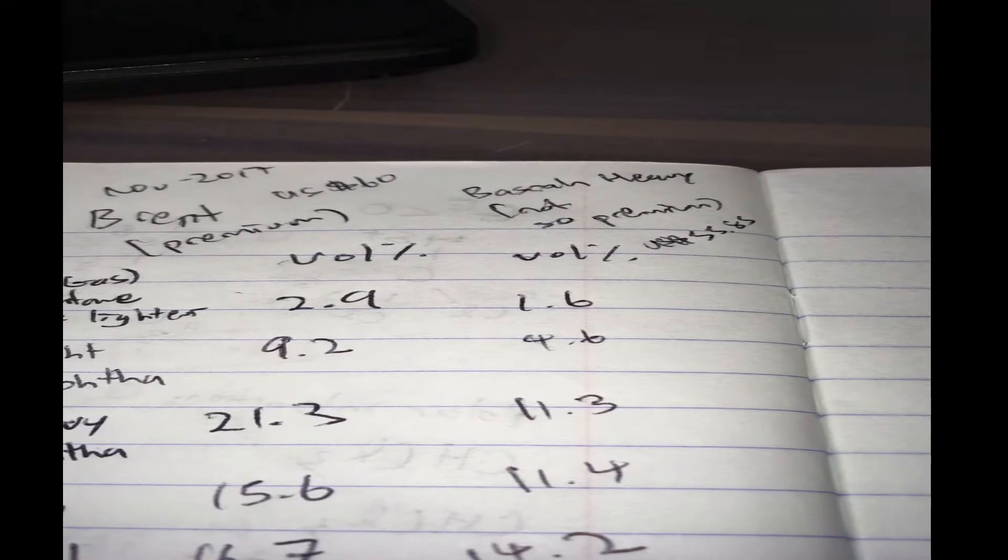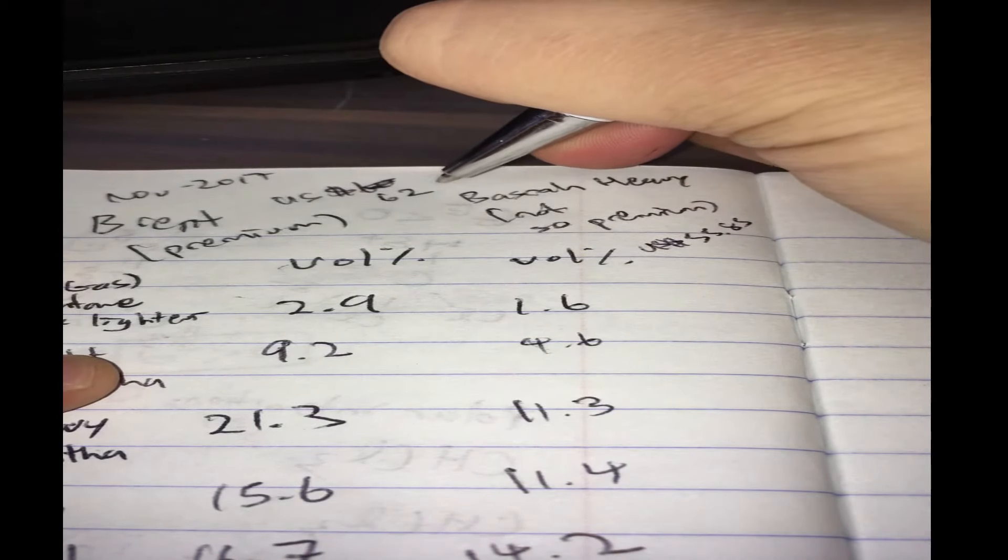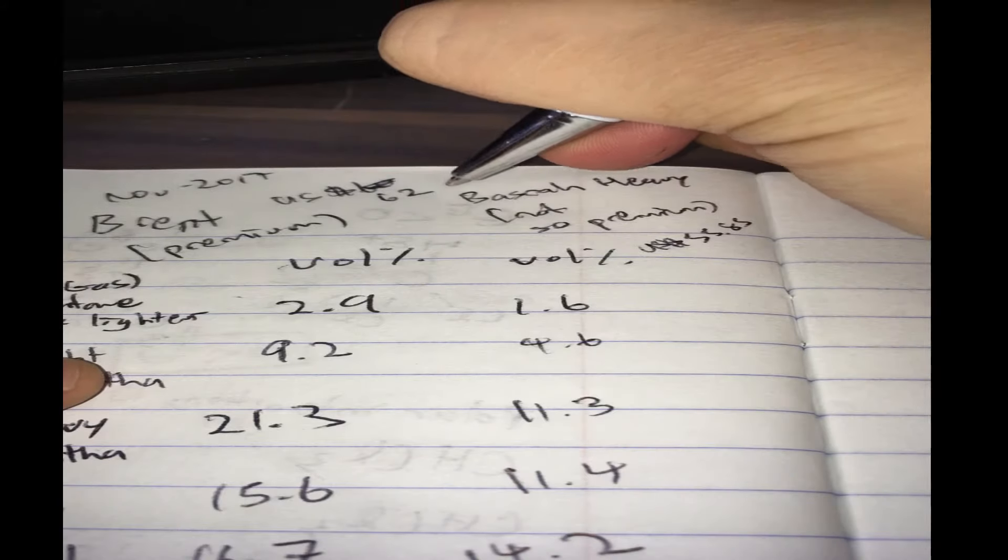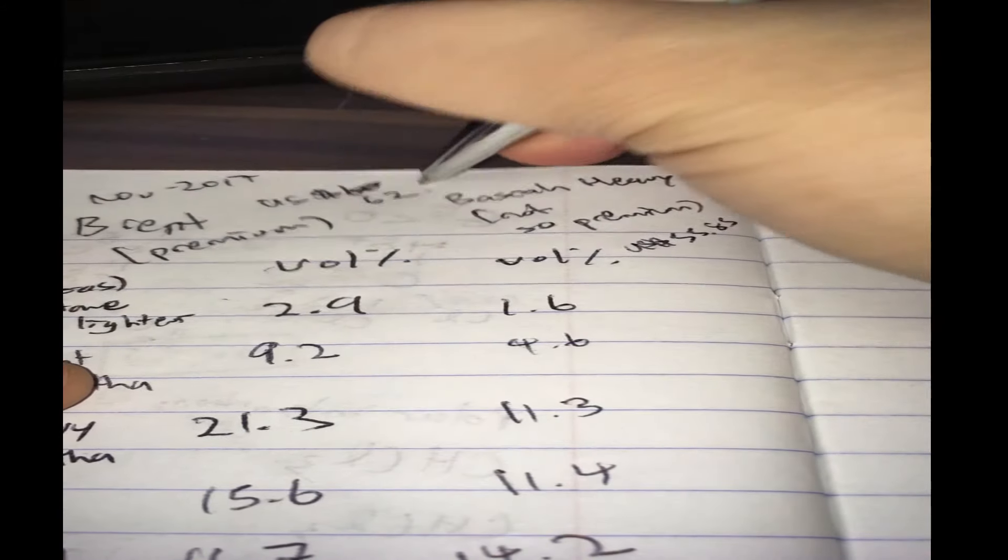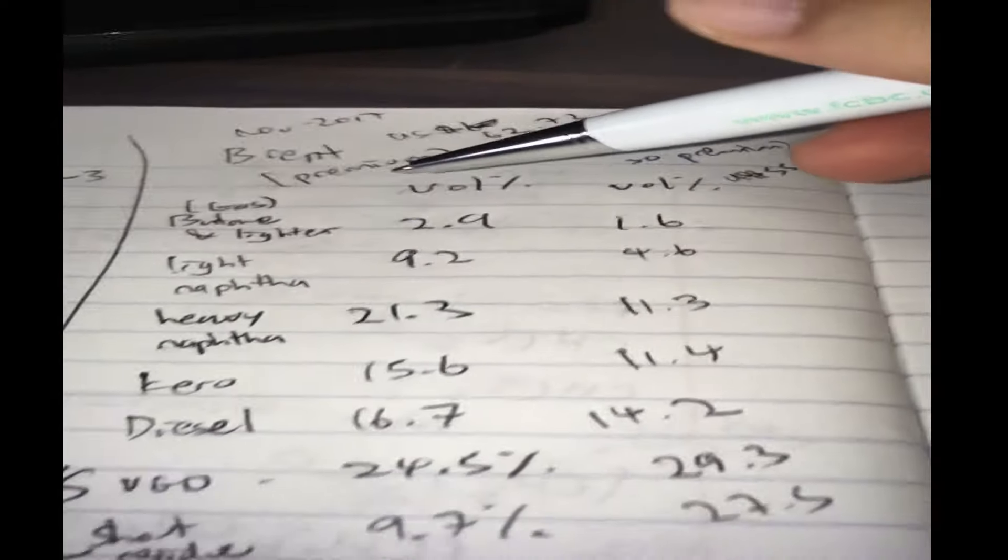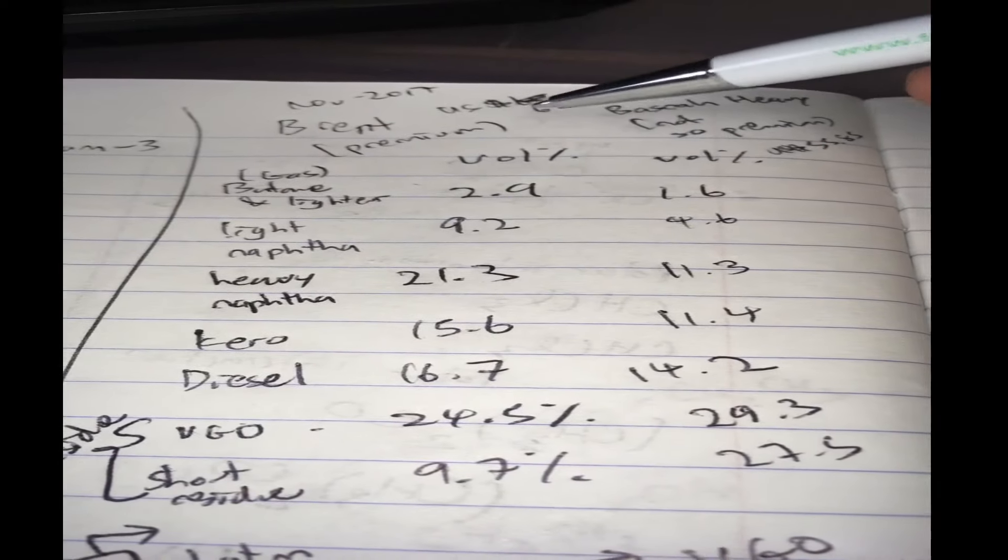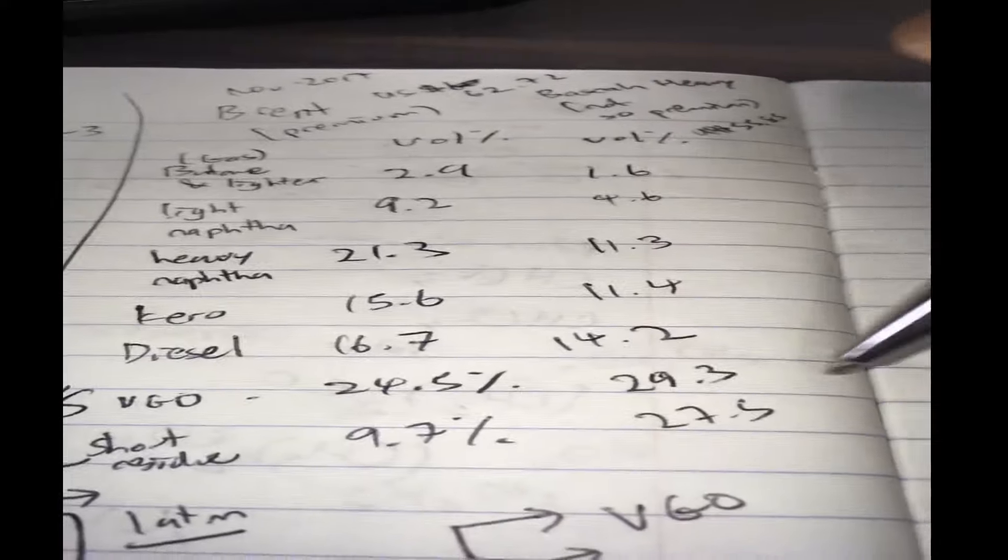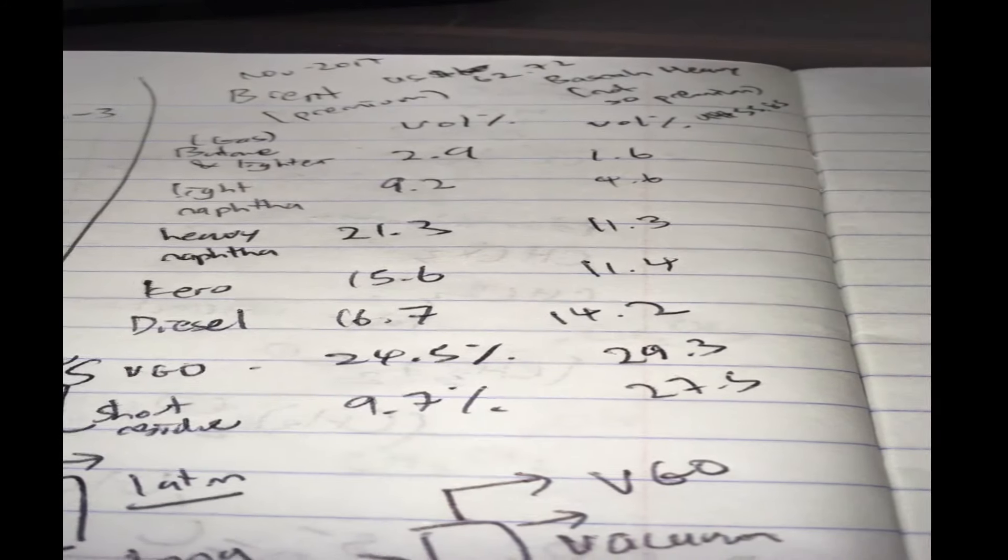And Brent, this is 62. As of November, I just checked the oil price, about 62.72. So you see, the light stuff, the premium stuff, which contains a lot of all these, is going to be more expensive than this, because this is going to be more not so useful stuff.